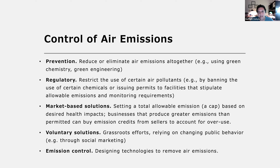Some ways that prevention can be done are using the concepts of green chemistry and green engineering. The regulatory approach involves restricting the use of certain air pollutants — for example, by banning the use of certain chemicals or issuing permits to facilities that stipulate the allowable emissions as well as the monitoring requirements.